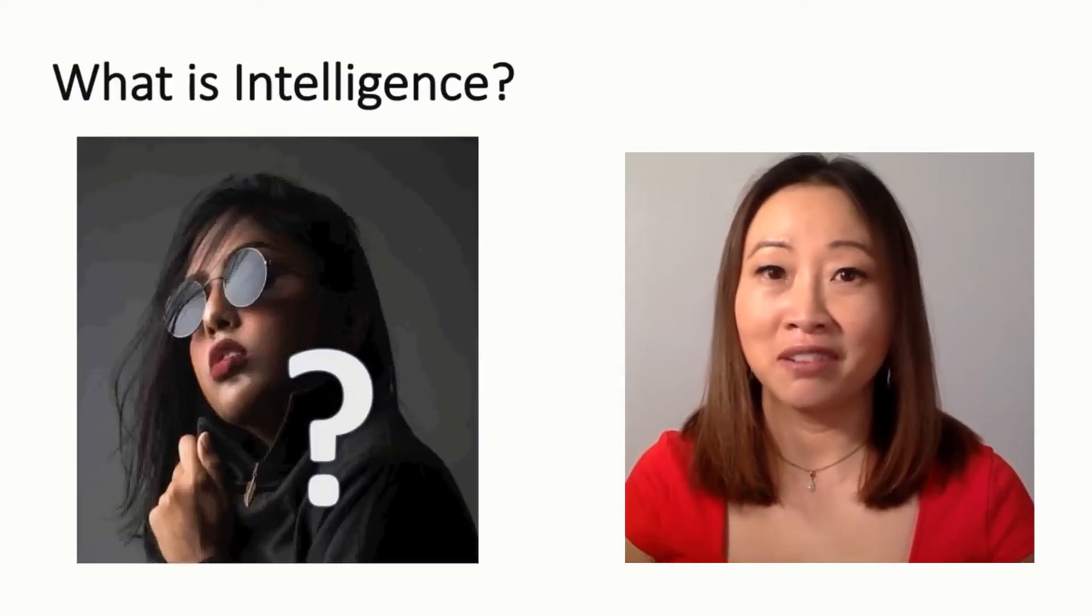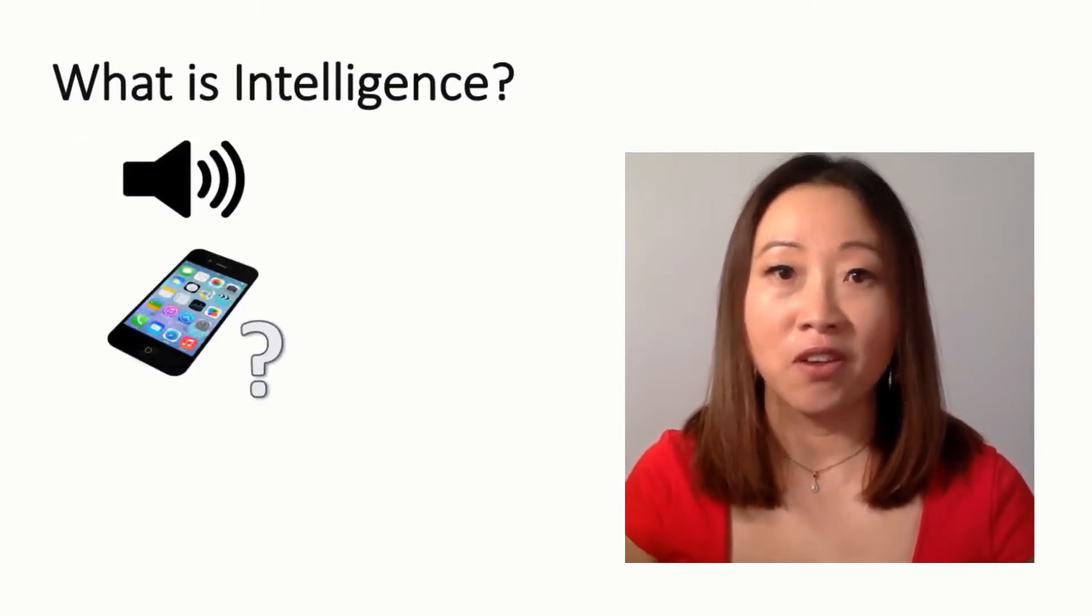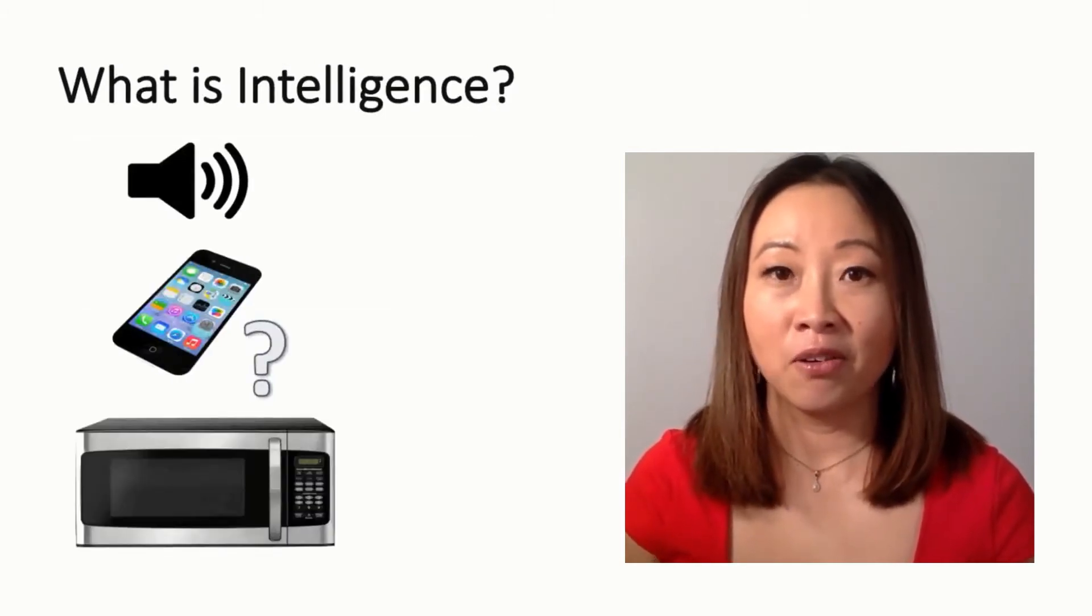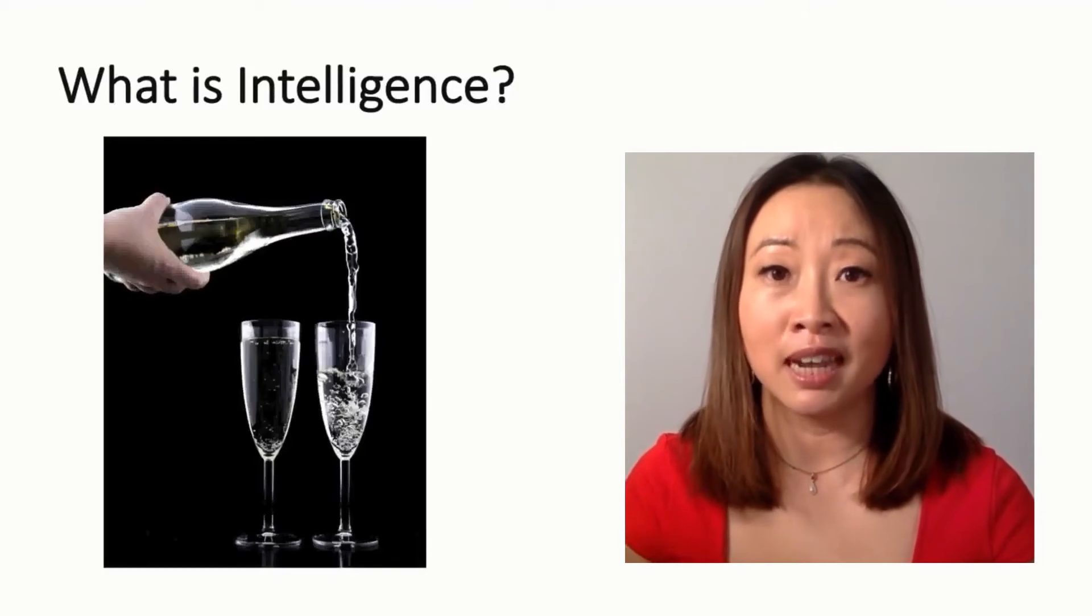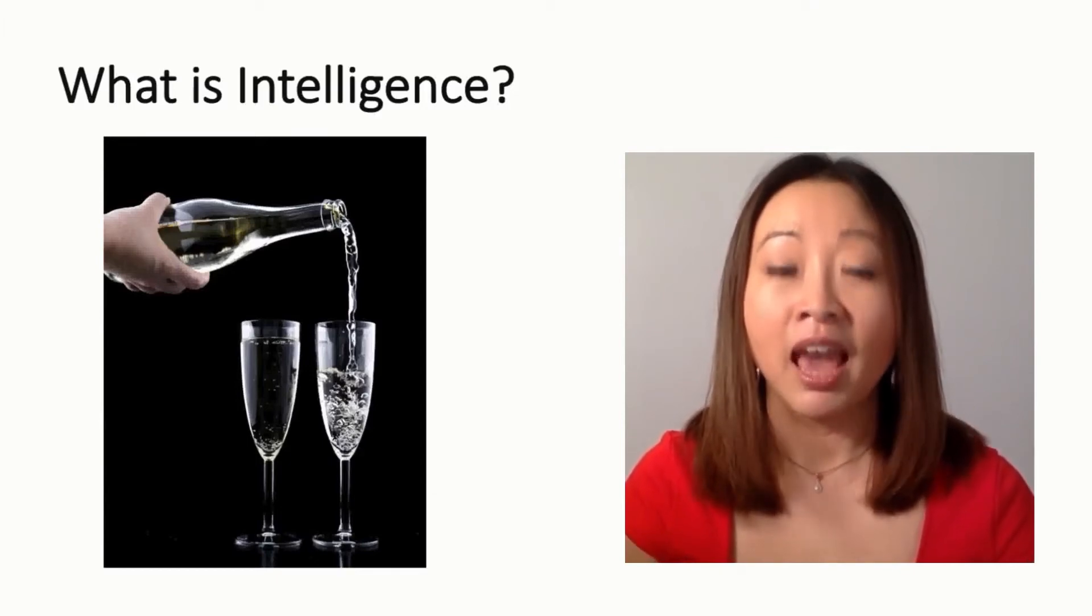So when I look at that photo and think, do I know that person? Or decide, is this sound coming from my phone or my microwave? Or, what are the sequence of muscle movements that I need in order to pour this glass of champagne? These are all situations that require highly complex information processing, and we use this information processing to make future decisions.